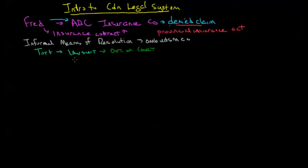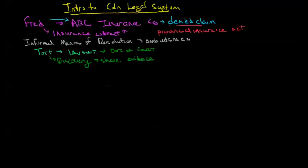Before we go to court, we're going to go through the process of discovery. There might also be some negotiation that happens here. Discovery is simply a sharing of evidence — both parties present evidence, typically in a somewhat informal setting with a court clerk there to write it all out, but not under the eye of a judge. Then, assuming we can't make a successful out-of-court settlement, we end up in court.